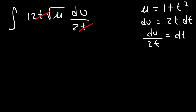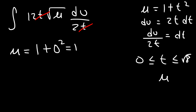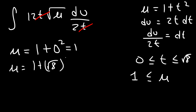And we need to change the limits of integration. Keep in mind t varied from 0 to the square root of 8. So let's plug in 0: replacing t with 0, we're going to have 1 plus 0 squared, which is 1. And then replacing t with the square root of 8, the square root of 8 squared is just 8, so 1 plus 8 is 9. So u is between 1 and 9.